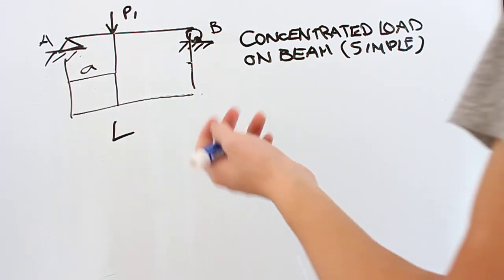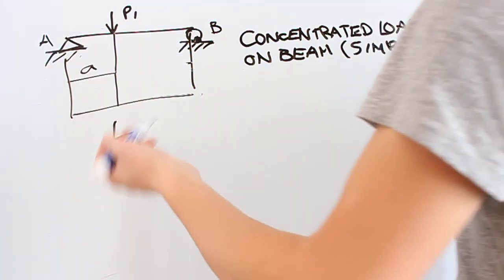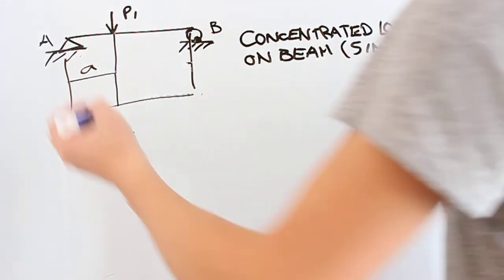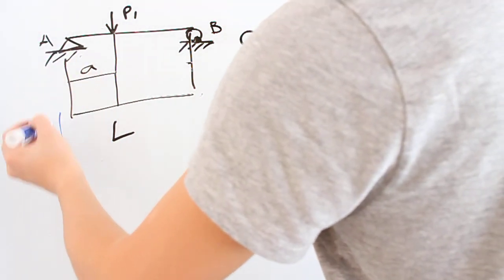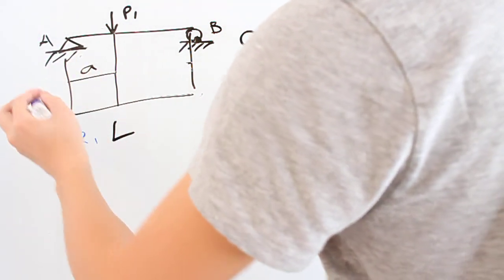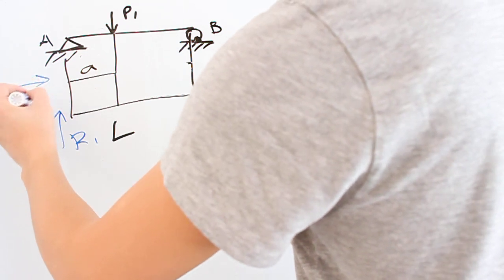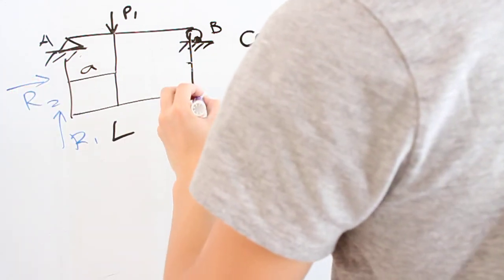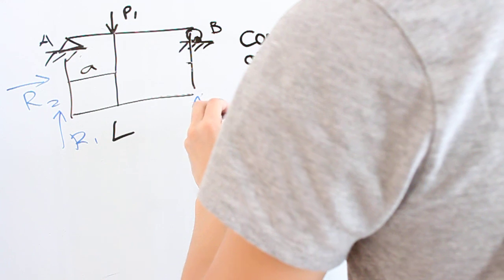Like we did before, we first need to draw the forces that aren't shown in this diagram. We know that the pin can possibly create a reactionary force vertically and horizontally, and the roller can create one horizontally.